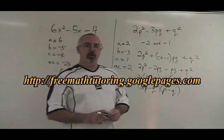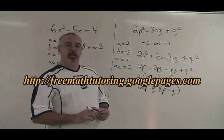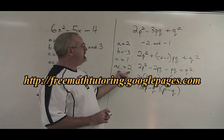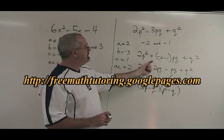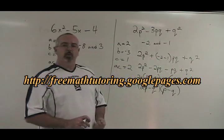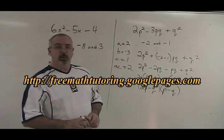So the complex trinomial method is very similar to the simple trinomial method, but you have to do these extra steps: the ac, the forced positive sign, the bracket, and the grouping the rest of the way, but it works, and it always works.